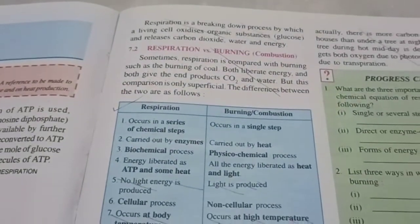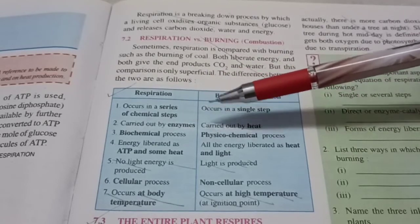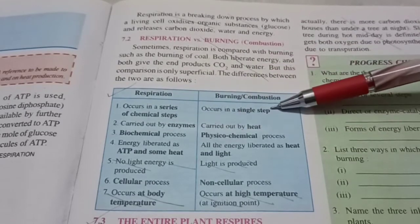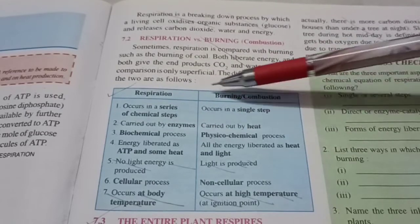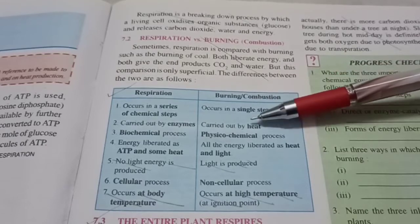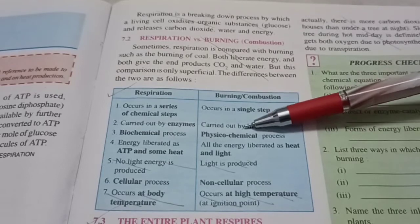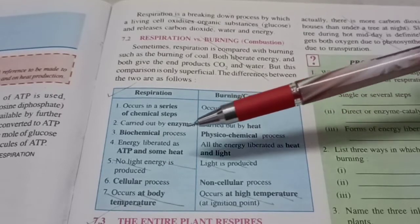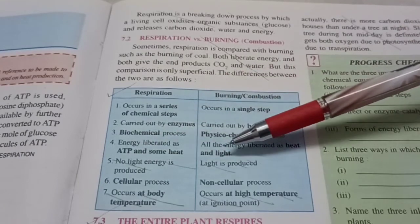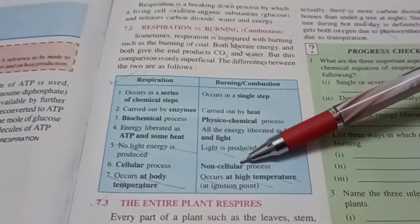Let's understand the difference between respiration and burning or combustion because in both cases, energy is being released from some fuel and oxygen is also required. However, this is a series of various chemical steps, whereas combustion is a single step, burning. It's simple. This is carried out by enzymes, whereas here we need to provide an ignition temperature or some heat to start the burning process. This is a biochemical process, whereas this is a physico-chemical process, because even non-living things can burn. Here, the energy is liberated partially in the form of heat and the other is saved or stored in ATP. Here, all the energy is liberated as heat and light. This is a cellular process and this is a non-cellular process.